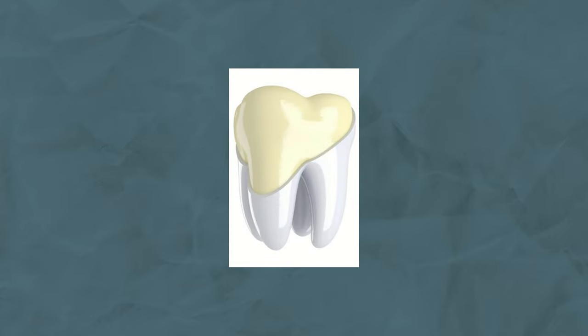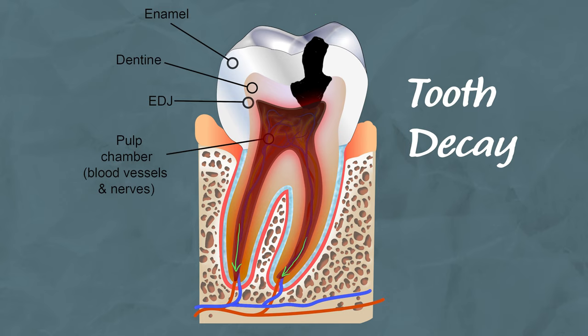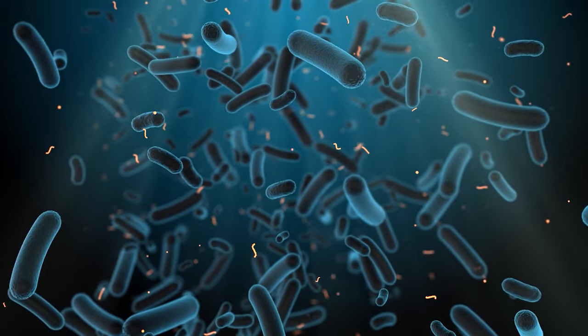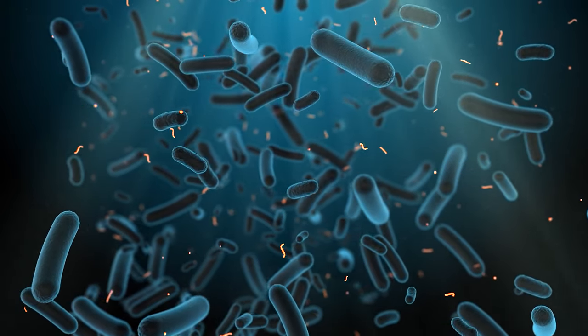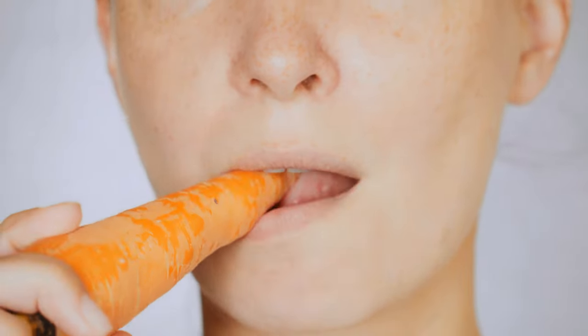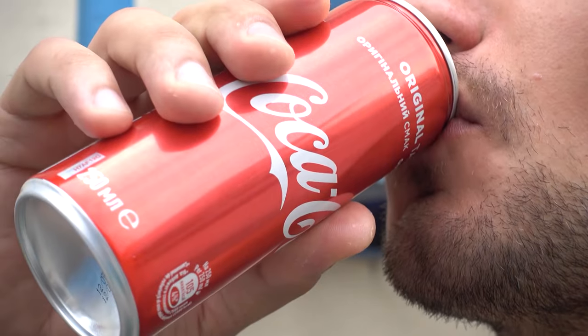Toothwear is the progressive loss of surface tooth tissue and is distinctively different from tooth decay, as there is no bacterial involvement. Your teeth will naturally wear away slowly over time due to years of eating, drinking, and brushing, which obviously increases as you age. In this video, we're not concerned about the normal aging effects on your teeth. However, there are three main ways you can accelerate toothwear which may lead to dental problems.